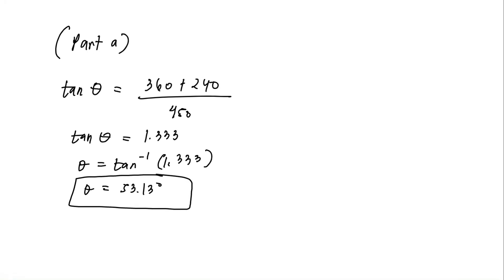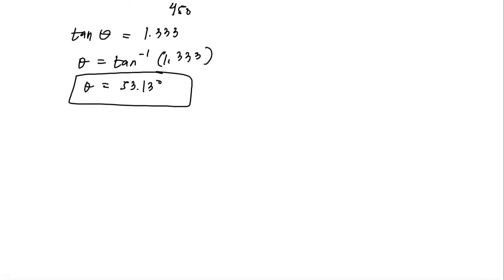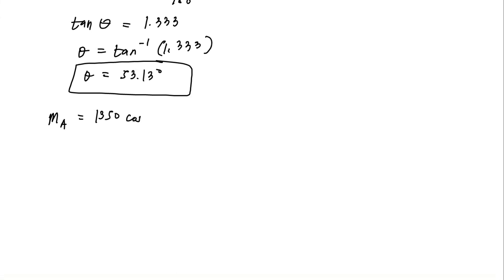Now here our F is the force in the cable AC. So we just need to substitute 53.13 degrees for the angle and 1350 Newton for the force. So we have our MA equals 1350 cosine...